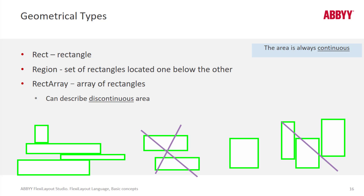One use case for a rectangle array is if you want to map one block to rectangles on different pages.